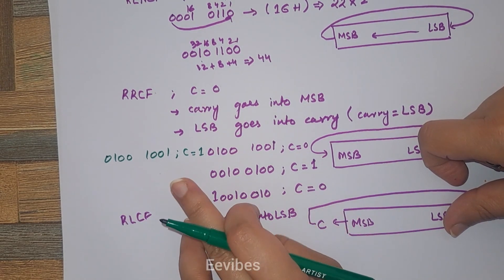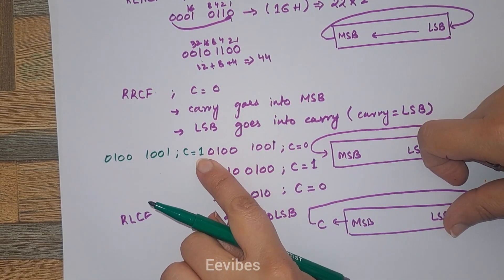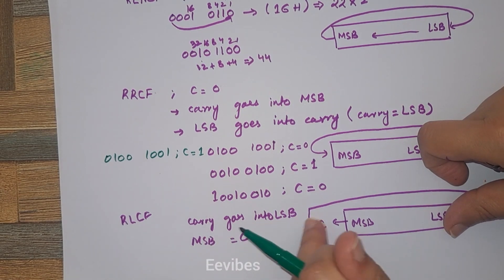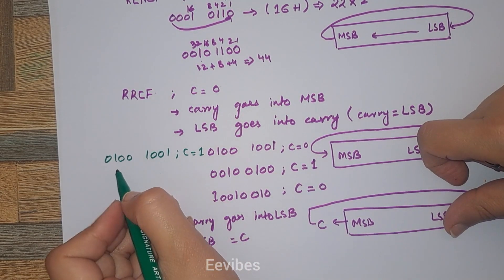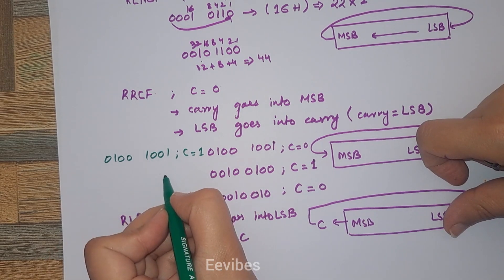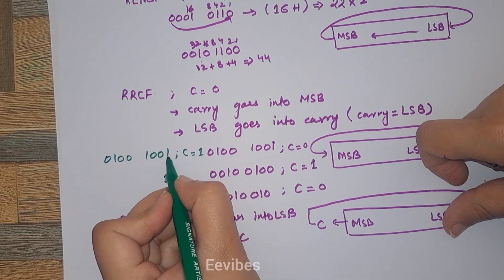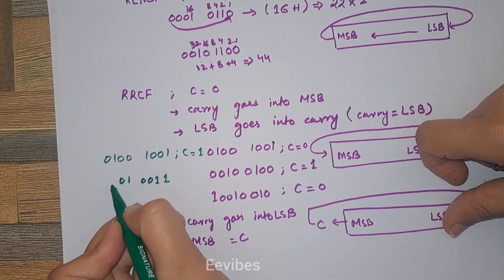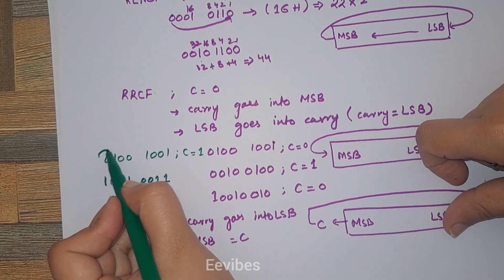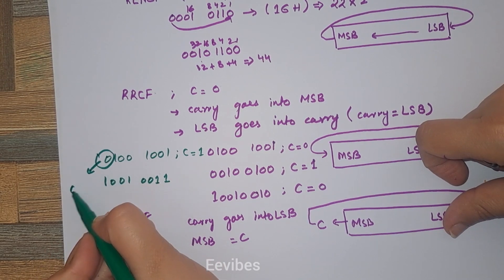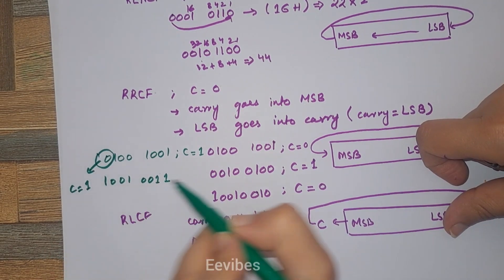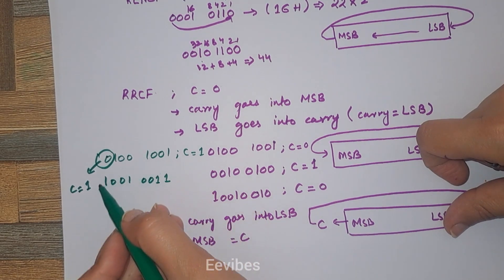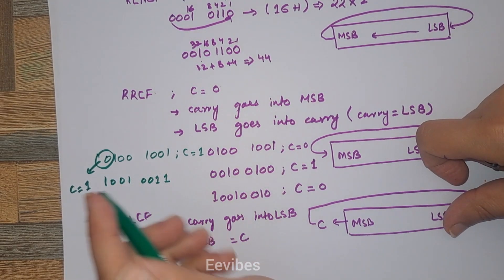We assumed the carry equals 1. Carry should go into the LSB position, so the result starts with 1. Then the rest of the bits are 1, 0, 0, 1, 0, 0, 1. The remaining MSB 0 is copied into the carry. This is the new or updated content after performing the rotate left through carry instruction.